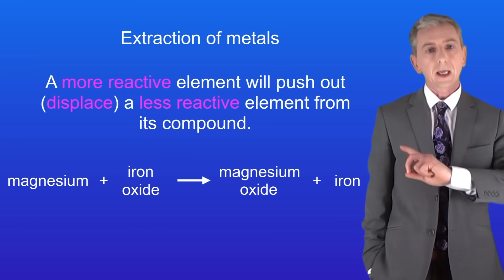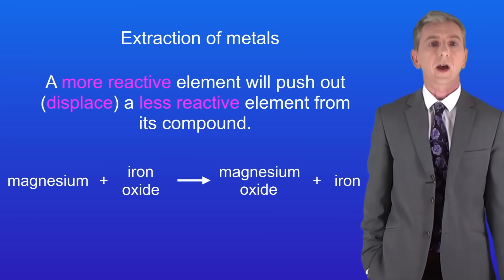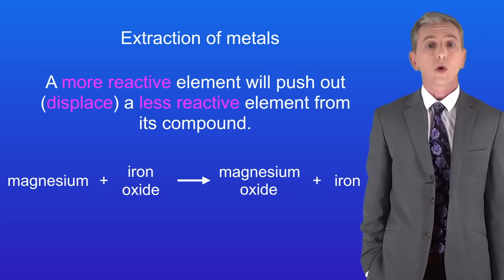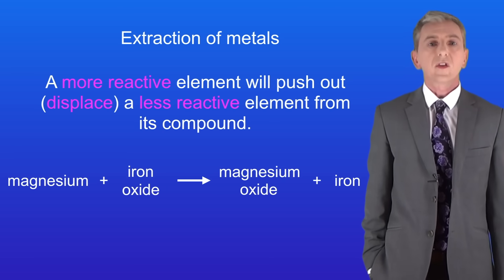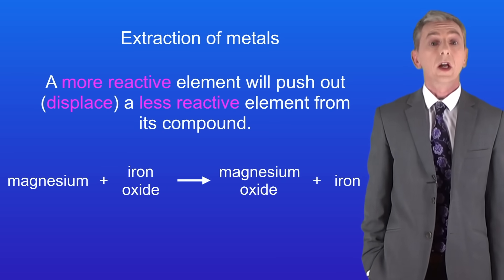So I'm showing you here magnesium reacting with iron oxide. As we saw, magnesium is more reactive than iron. This means that the magnesium can remove the oxygen atoms from the iron atoms producing magnesium oxide and iron.